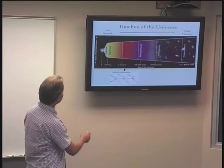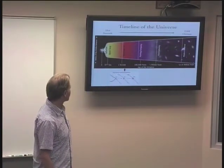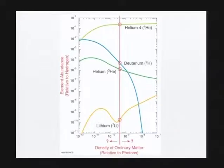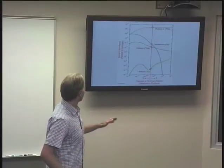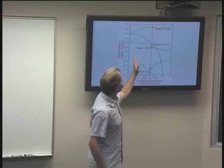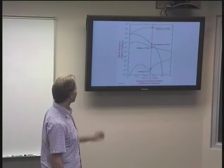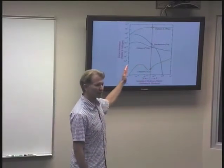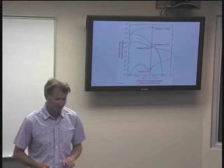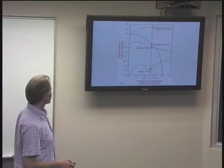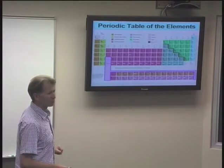If you go back to Big Bang nucleosynthesis — when hydrogen fused together to form helium — these are the predictions of how much helium, deuterium, helium-3, helium-4, and lithium we should have relative to hydrogen, depending on the ratio of ordinary matter to photons, which reflects that asymmetry between matter and antimatter. These are the measured values and they match. This is what we get coming out from this primordial cooking. But lithium is not exactly a heavy element, and so all the rest of the periodic table was not forged during the Big Bang — it was forged in the stars.